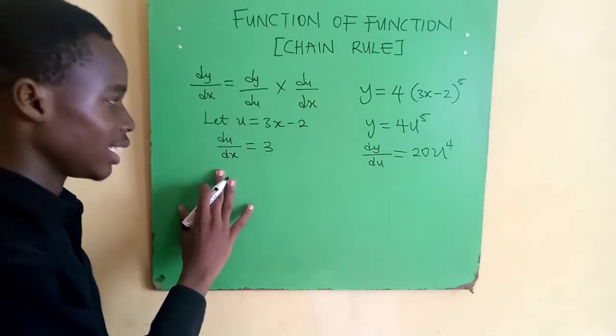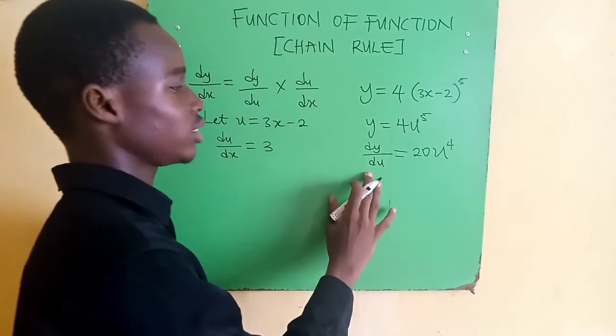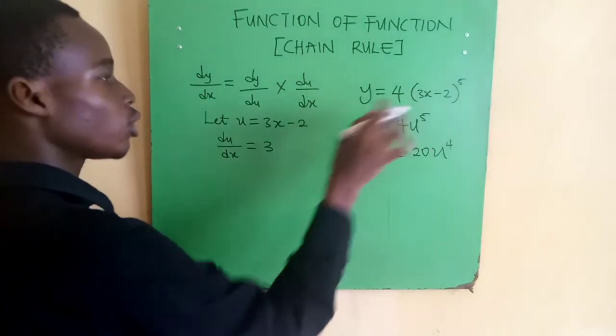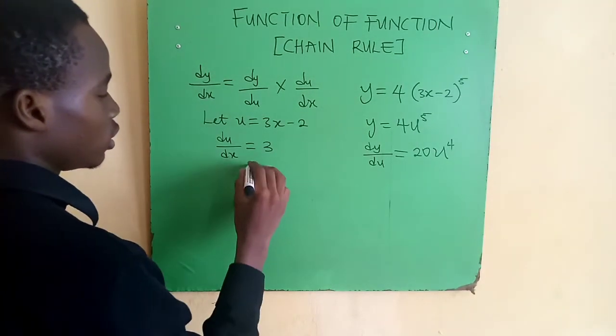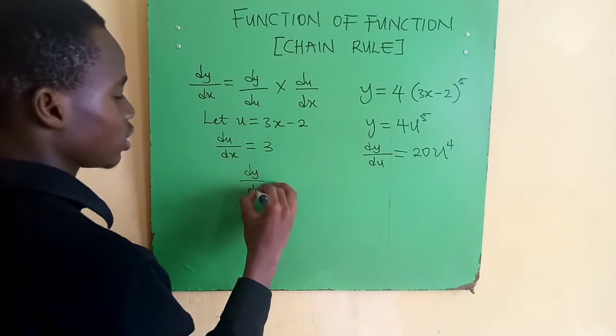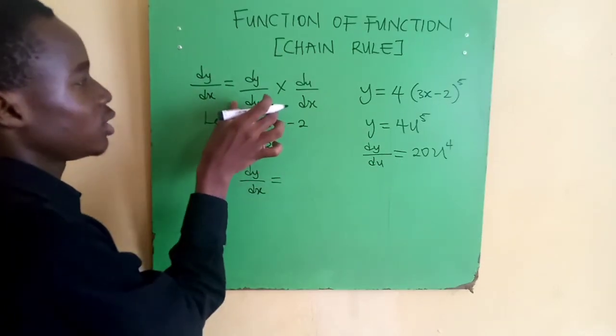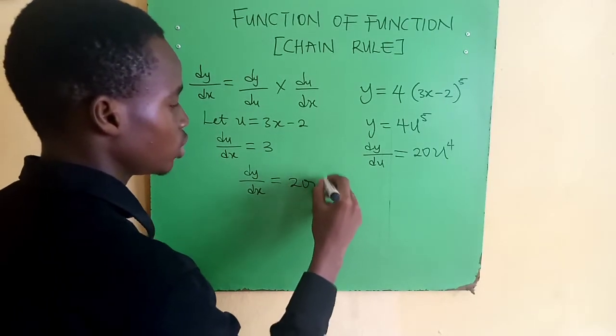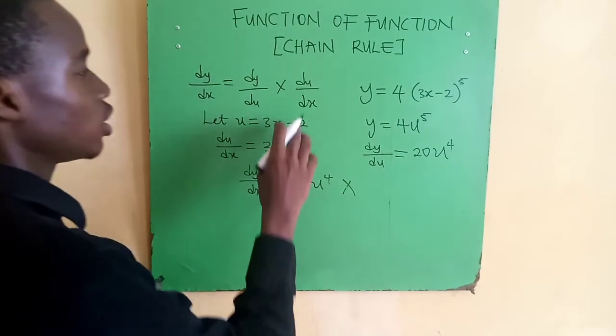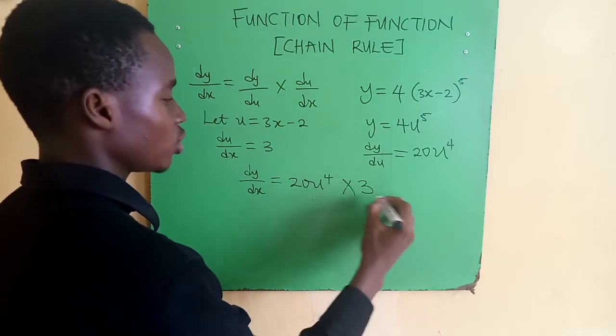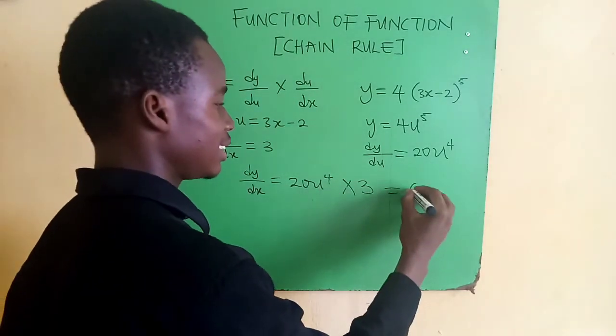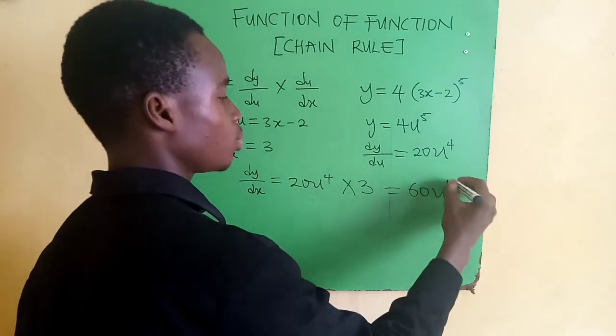Now to get the final derivative dy/dx, we have dy/du times du/dx. That's 20u^4 times 3. When we multiply, we get 3 times 20 = 60u^4.